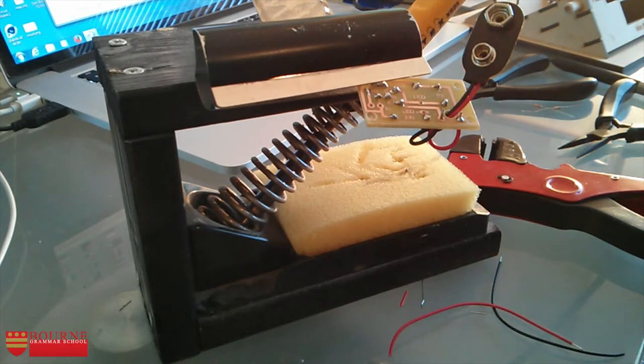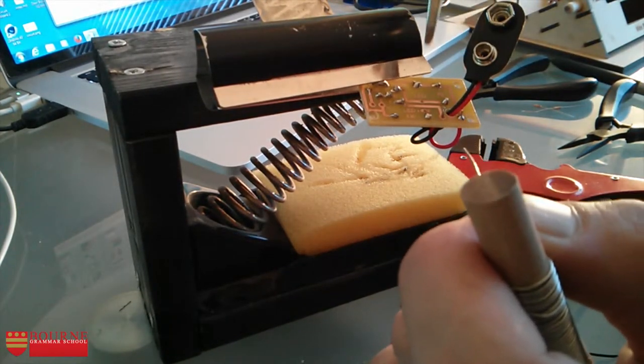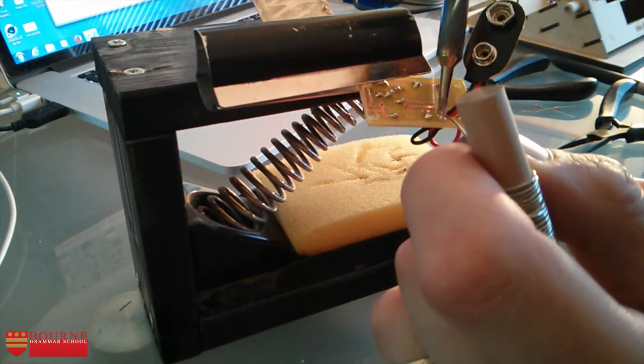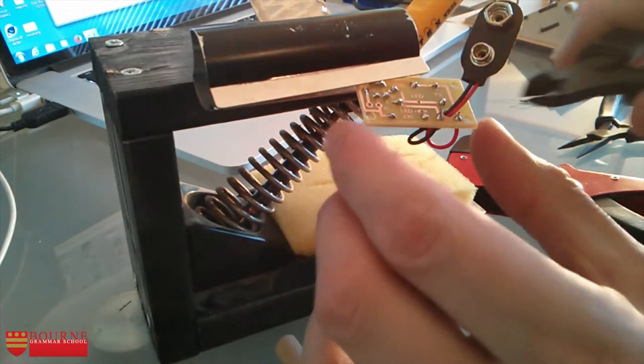Once again I can solder that to the board. That's the negative done. I'm just going to trim off the ends here.